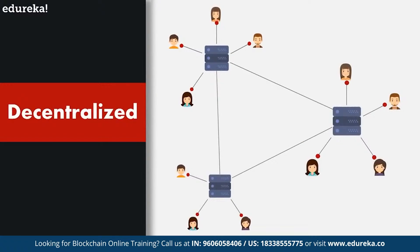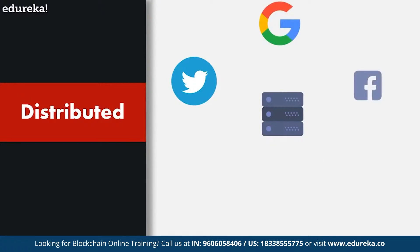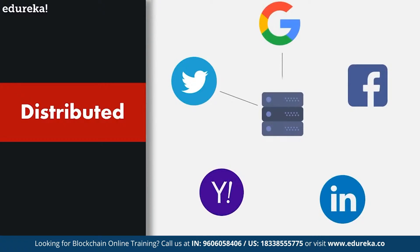A decentralized system is exactly the opposite of a centralized system — it is when a service is ruled by no single governing authority. You're actually using a decentralized system right now: that is the Internet. Nobody really owns the Internet and nobody is really supervising what websites can or cannot do. Now, what does it mean to be distributed? To understand that, let's look back and analyze what has been the common reason for a majority of data breaches of the past.